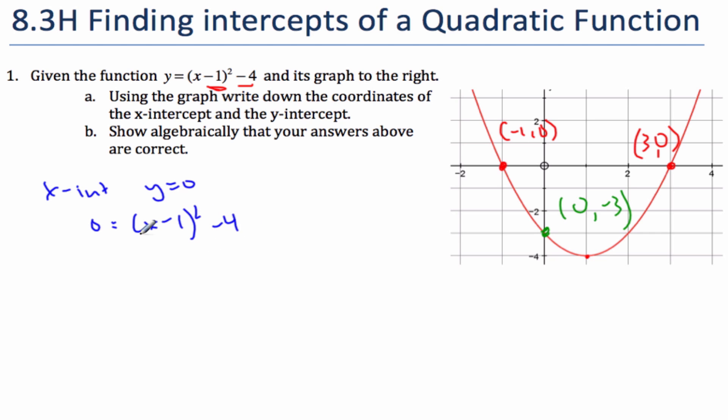Now, there's two ways to do this. I could expand this out and then subtract 4, simplify, and then factor. Or I could also do this: I could add 4 to both sides. (x - 1) squared. Then I'm going to take the square root of both sides.